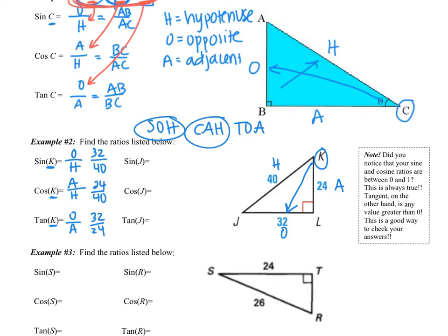Now I do expect that you're going to simplify those. So for sine, I can divide both of those numbers by 8, and I get 4 fifths. Cosine I can divide by 8, and I get 3 fifths. And tangent I get 4 thirds.